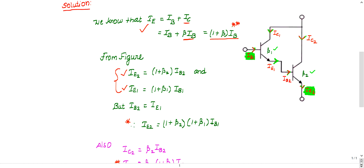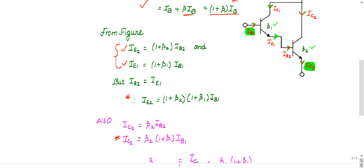From the figure, you can see that ie1 equals ib2. So I'll replace ie1 with ib2: ib2 = (1 + β1)·ib1. This substitution gives us ib2 in terms of the input current ib1.